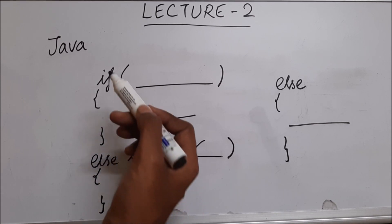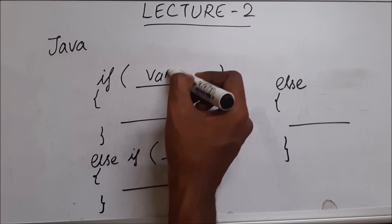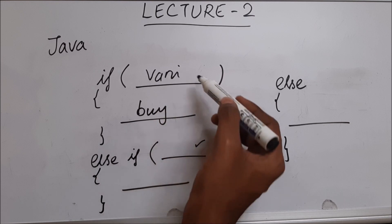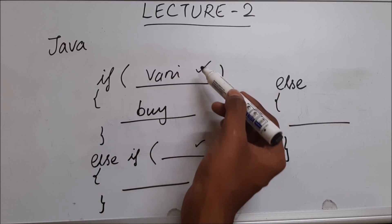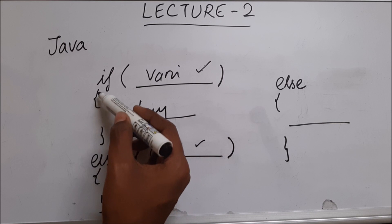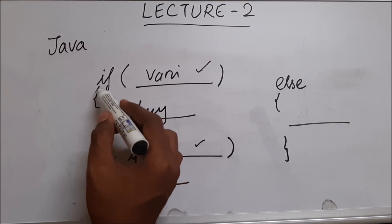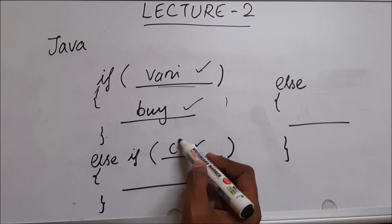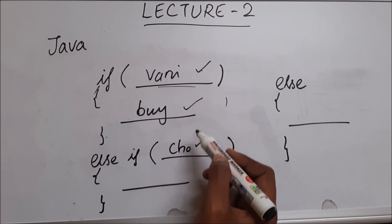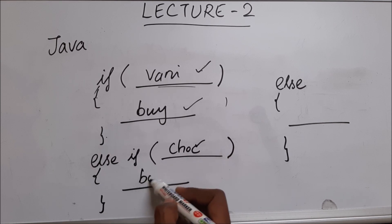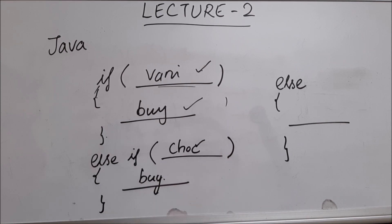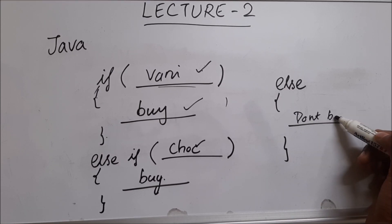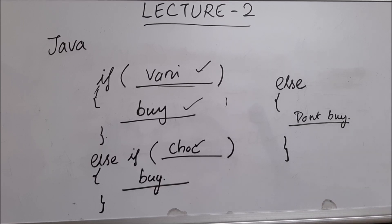Example is, I'll say if ice cream is vanilla, then buy. Here the condition is given. If this condition is met, you will go inside this part of the code and you will execute whatever is written here. Here it will be if the ice cream is chocolate, then you will say buy. And else you will say don't buy. So this is the syntax for if, else if, and else in Java.